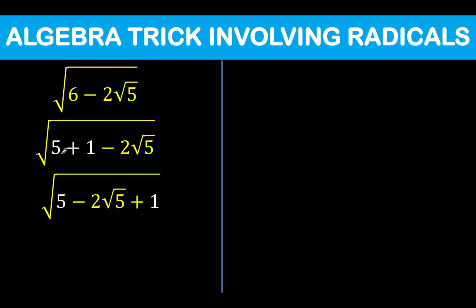We can do that by first splitting 5 and 1 with 5 as the first term minus 2 square root of 5 as the second term and positive 1 as the last term.